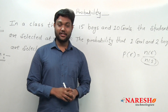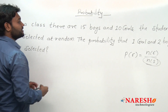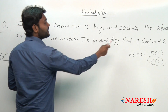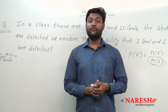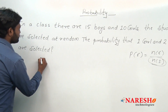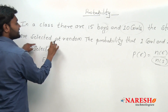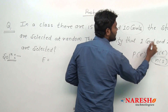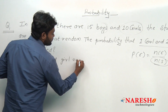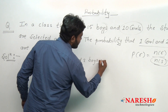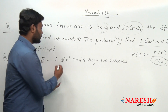Let us see how with a question. The question is: in a class, there are 15 boys and 10 girls. The students are selected at random. The probability that one girl and two boys are selected — we have to find out this probability. So what is my event here? Event is: one girl and two boys are selected.